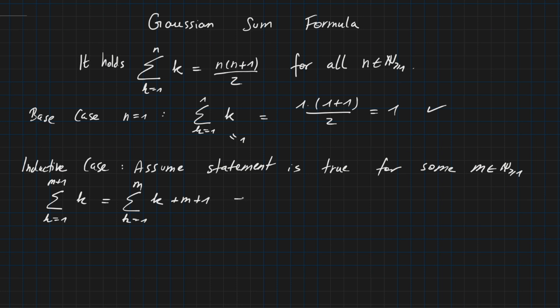So now by assumption, by assumption we know that this formula is true for m. And here we have the sum from k equals 1 to m, so we can apply the formula here. So if we apply it then we have m times m plus 1 over 2. This is exactly here the formula we have, the right hand side of the formula. And then we still need to add m plus 1.